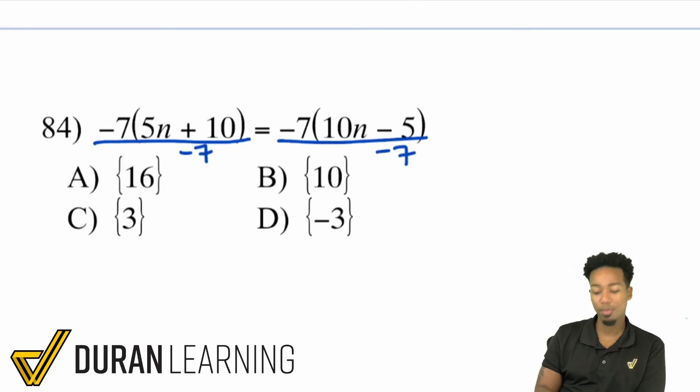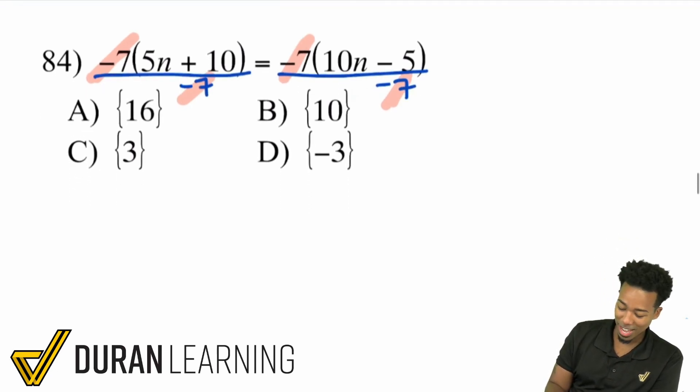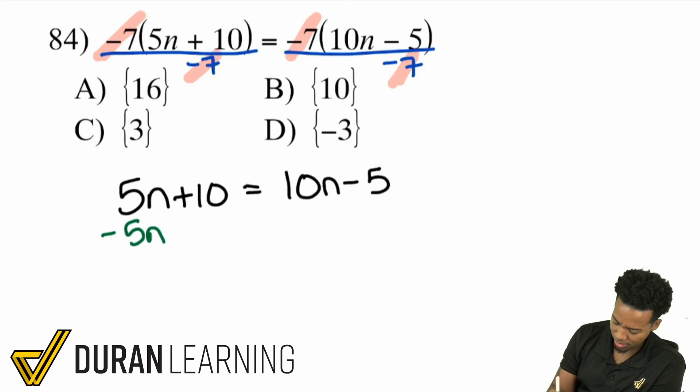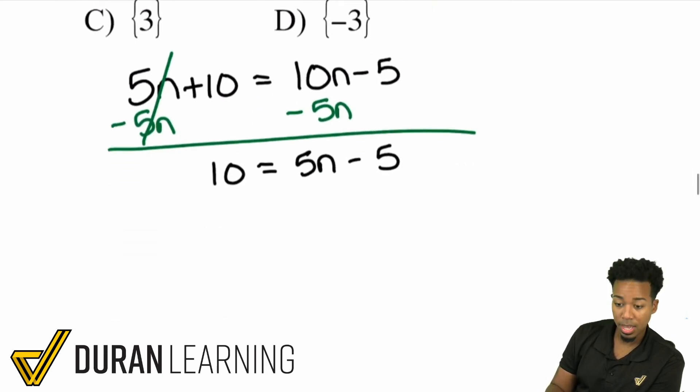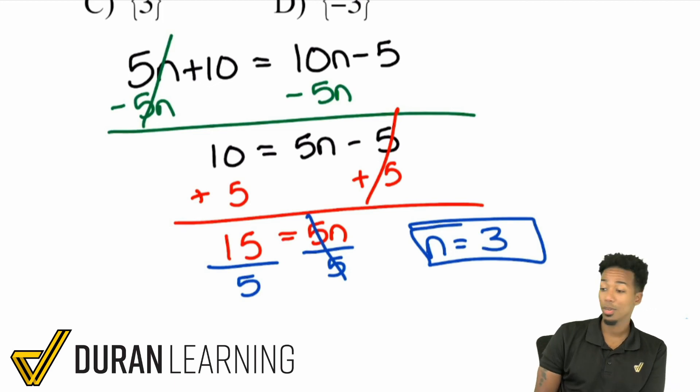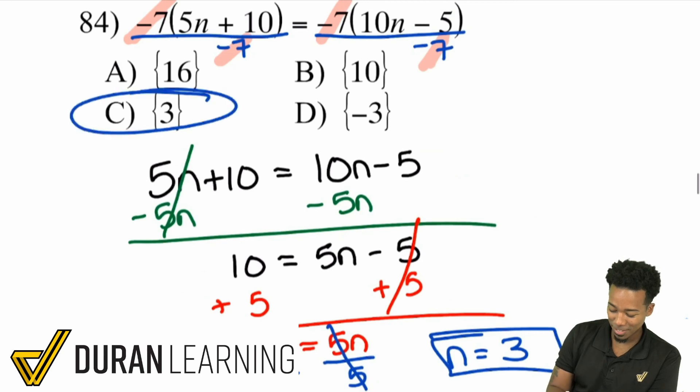Now what we have is 5n plus 10 equals 10n minus 5, the stuff that was left on the inside. From here, let's just solve as normal. I believe the answer is going to be 3. Let's subtract 5n on both sides. Cancels here, giving us 10 equals 5n minus 5. Then we'll continue the process. Add 5 to both sides, canceling here, giving me 15 equals 5n. Then we divide both sides by 5, giving me n equals 3. Right there. And we are all good, that answer there was 3, it's C, and we're all set.